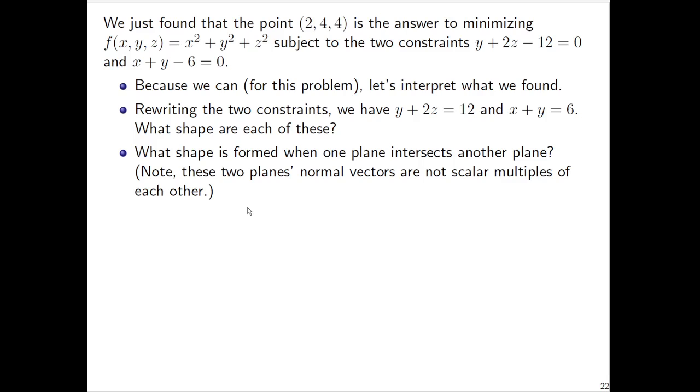The intersection of two planes ends up being a line. So the constraints actually mean that we're only considering points in 3D space that are part of a specific line.